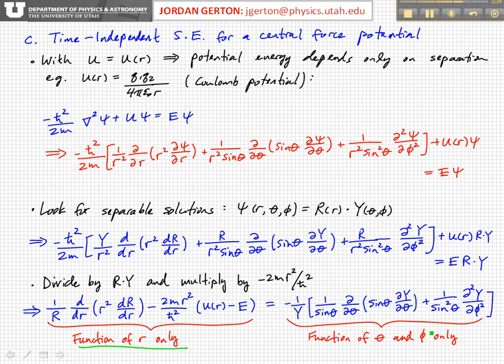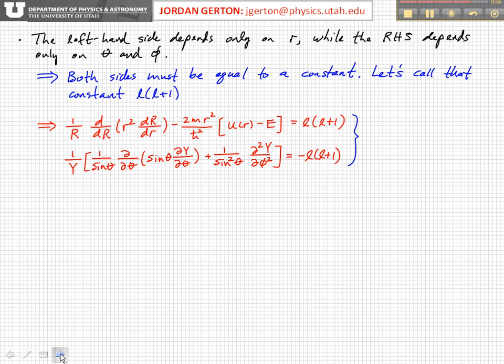Since theta, phi, and r are independent variables, and since this side is a function of little r only and this side is a function of theta and phi only, both of these sides - both the left-hand side and the right-hand side - must be equal to a constant. This equation has to hold true for any value of r, theta, and phi. The only way for that to happen is if both sides are equal to the same constant.